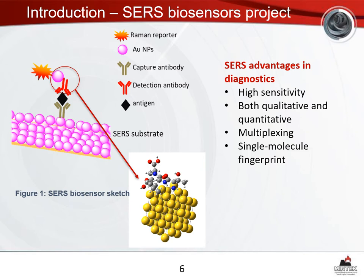The sketch shown in Figure 1 shows the architecture of a traditional SERS biosensor, whereby you have a support on which you chemically assemble the substrate in the form of metallic nanoparticles — gold or silver — and then chemically bind a capture antibody. The purpose of the capture antibody is to identify and capture the antigen of interest. A detection antibody also identifies and binds the antigen but at a different epitope, and it is conjugated to the SERS substrate in the form of metallic nanoparticles.